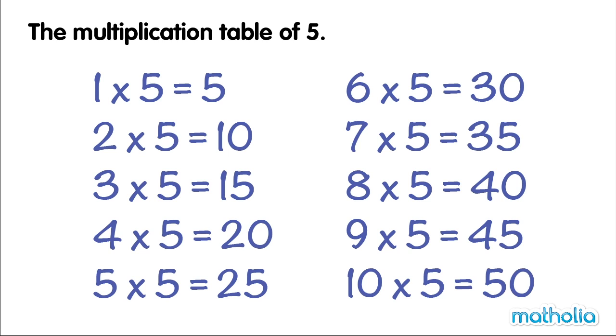Six fives are thirty. Seven fives are thirty-five. Eight fives are forty. Nine fives are forty-five. Ten fives are fifty.